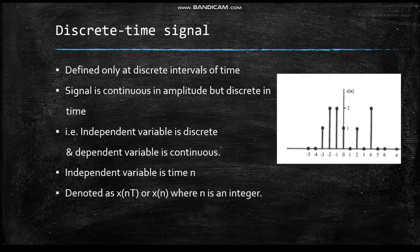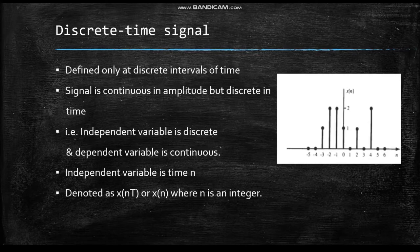Discrete time signals are defined only at discrete intervals of time. This signal is continuous in amplitude but discrete in time — that is, the independent variable is discrete while the dependent variable is continuous. Here the independent variable is time but it is denoted as n. The signal is represented as x(n), where n is an integer.